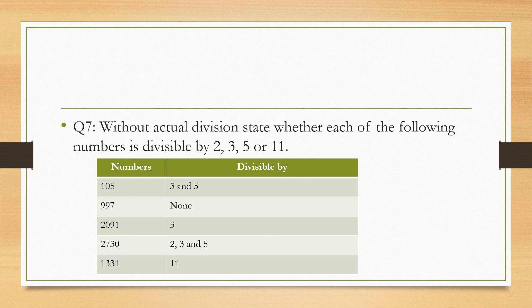Question number 7: without actual division, state whether each of the following numbers is divisible by 2, 3, 5, or 11. Now let us begin with number 1, that is 105. To test the divisibility of 2, we need to know that the last number should be 0, 2, or any even number. So 5 is not an even number, so it is not divisible by 2.